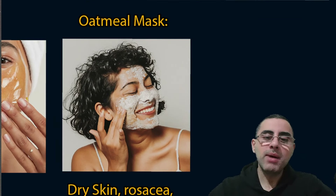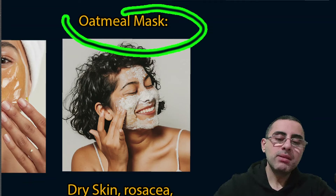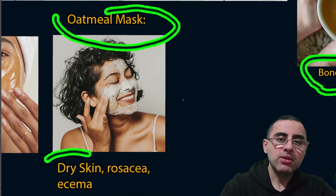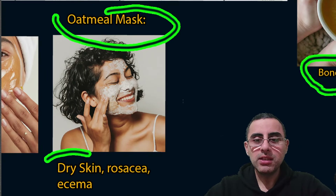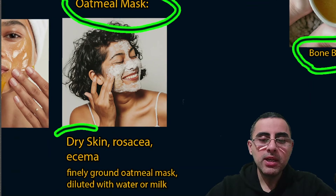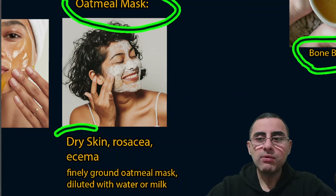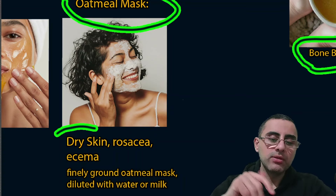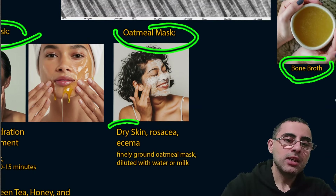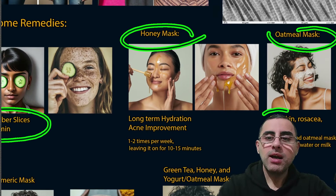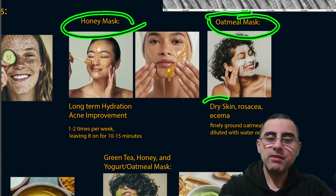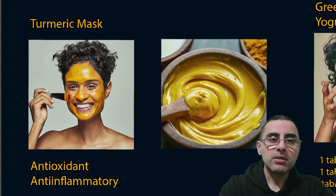The second most effective mask is oatmeal mask, which is especially effective for dry skin, rosacea, and eczema due to its anti-inflammatory action. It also increases hydration. Finely ground oatmeal is diluted into water or milk and applied on the skin for 15 to 20 minutes, two or three times per week. Honey and oatmeal masks are both considered effective, with oatmeal especially good for dry skin.